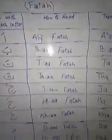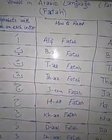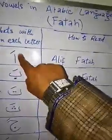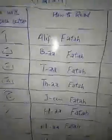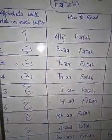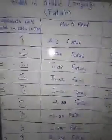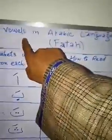We learned that there are three short vowels in Arabic. Fatah is a short diagonal stroke written above an Arabic letter — for example, Alif has a short diagonal stroke on it. It has a sound, and we practiced the first five letters: Alif, Ba, Ta, Tha, and Jim. Today we are going to complete our practice with all 29 Arabic alphabets having Fatah, the first short vowel, on each letter.